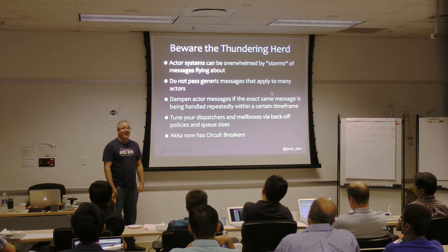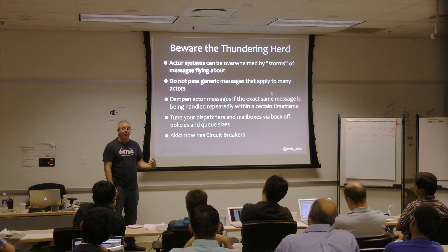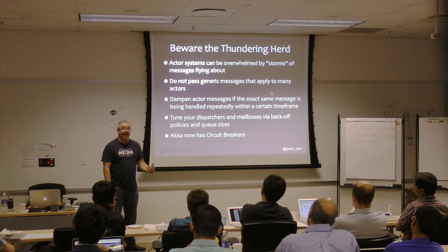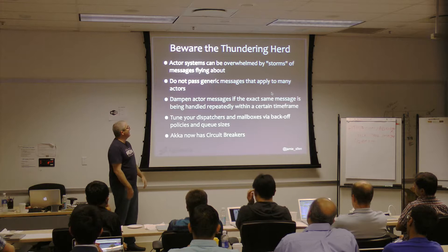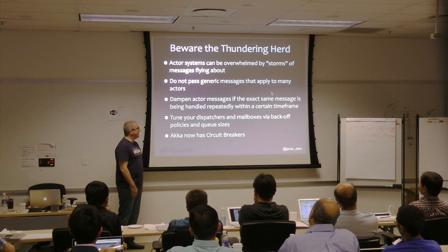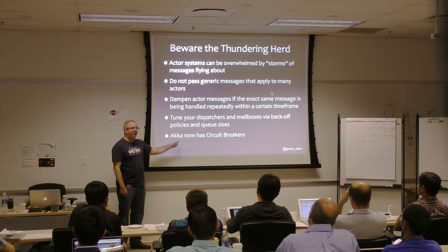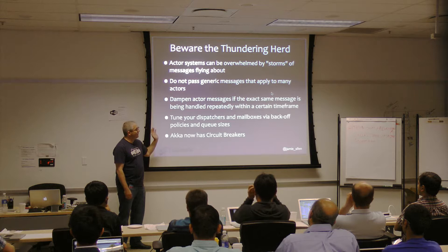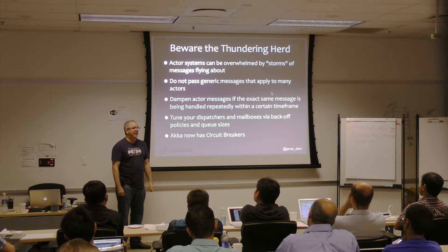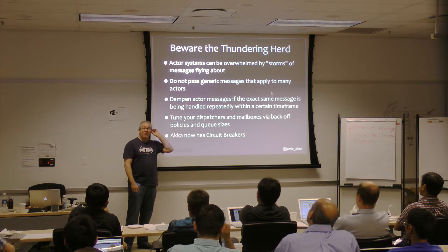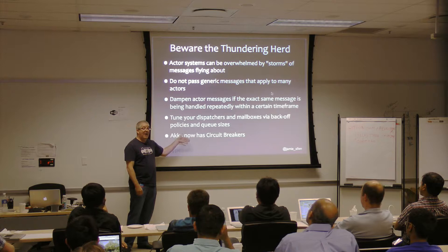Event storms can be mitigated by not passing generic messages. If you find yourself sending something like 'accounts updated,' that's bad. Send very specific messages — lots of them — representing everything individually that changed. We can also use dispatcher tuning with backup policies, queue sizes, and circuit breakers, which let you apply back pressure by saying you're overloaded and won't accept messages for a time period. This becomes relevant with Akka clustering and distributed workers.